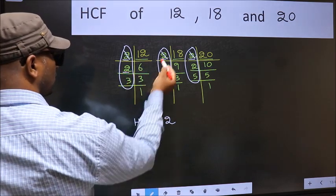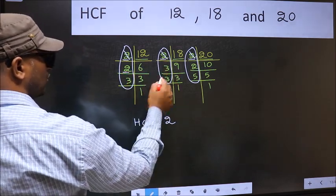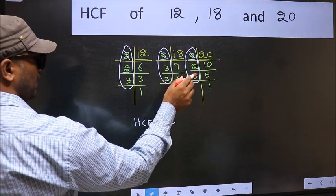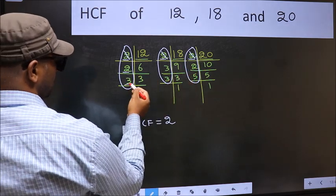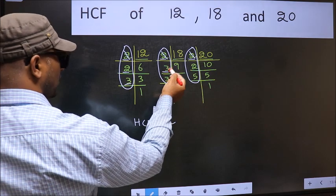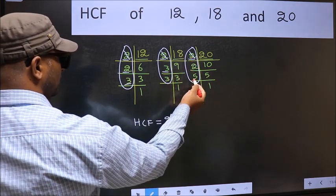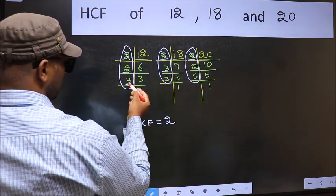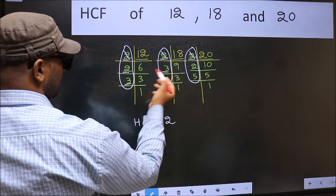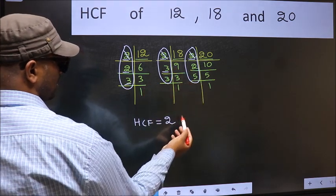Next number 2. Do we have 2 here? No. So no need for us to check in the other place. Next number 3. Do we have 3 here? Yes. Go to the next place. Do we have 3 here? No. 3 is not present in all the 3 places. So we cannot write here.